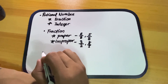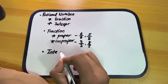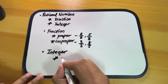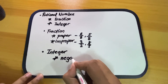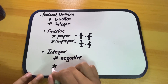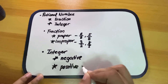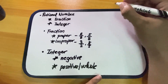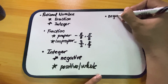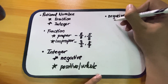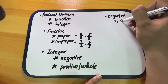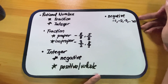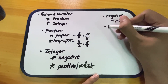Now the second group under rational numbers is integers. Integers are grouped into two: negative and positive or whole numbers. The negative integers are numbers like negative 1, negative 2, negative 3, until negative infinity.